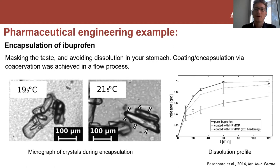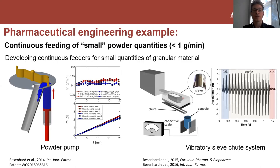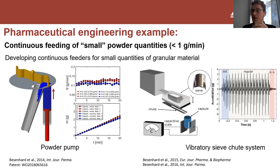Another example which sounds trivial but is actually way more complex in practice: feeding very small quantities of powder - feed rates of well below one gram per minute. Feeders we developed include, for example, a powder pump on the left, or what we call a vibratory sieve shoot system on the right. Basically a sieve that you vibrate so powder exits and is fed to whatever process you're feeding into. The latter is actually very similar to what you would have played with in the sandbox.